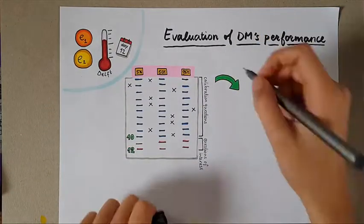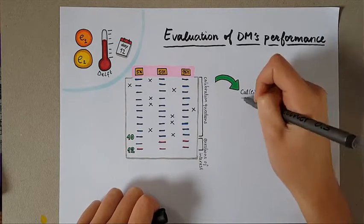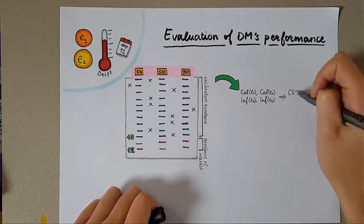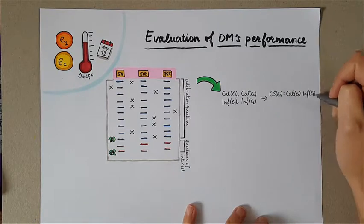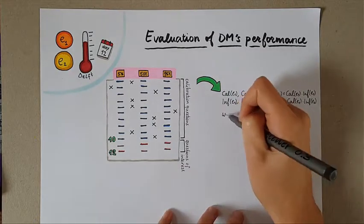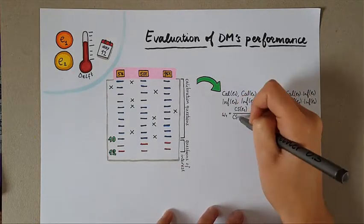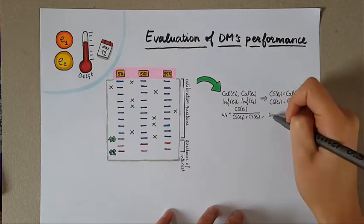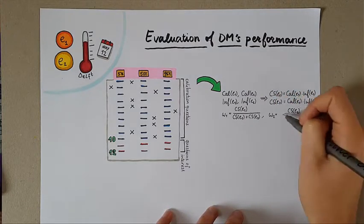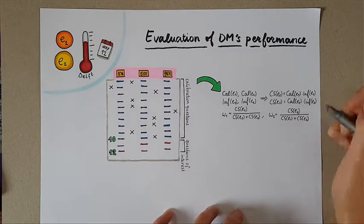First we compute the calibration score and the information score of the two experts. Multiplying the two scores gives the combined score of the two experts and we can then compute the weights for the two experts by dividing each combined score by the sum of the two combined scores.